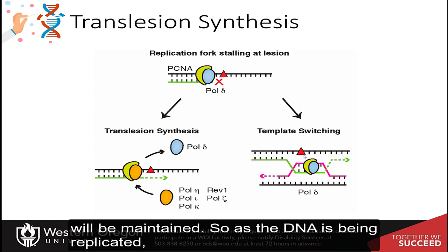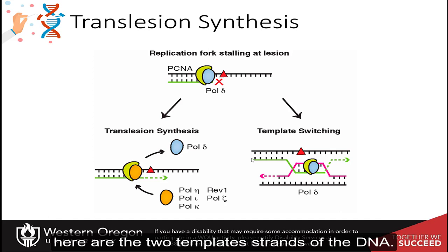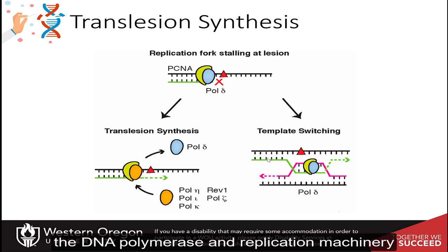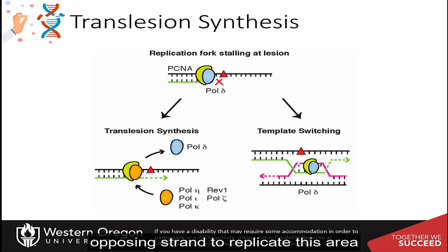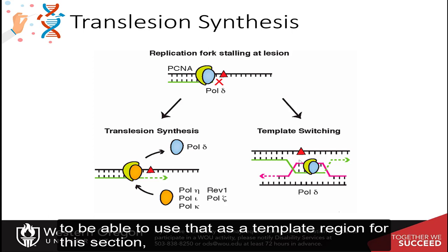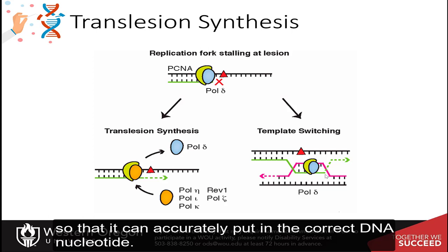So as the DNA is being replicated, here are the two template strands of the DNA. You can see that when it comes upon this lesion, the DNA polymerase and replication machinery is going to allow for the opposing strand to replicate this area. And then it can use the daughter strand in this process called template switching to be able to use that as a template region for this section so that it can accurately put in the correct DNA nucleotide.